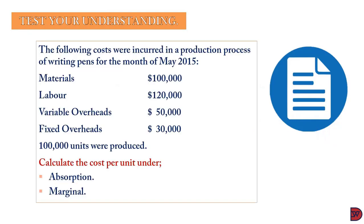Let's test our understanding. The following costs were incurred in the production process of writing pens for the month of May 2015: materials $100,000, labour $120,000, variable overheads $50,000, fixed overhead $30,000. The total units produced were 100,000. We are supposed to calculate the cost per unit under absorption costing and marginal costing.